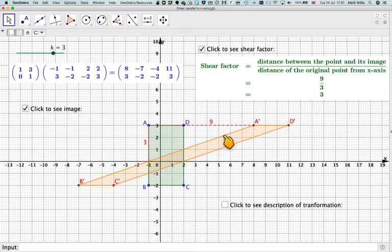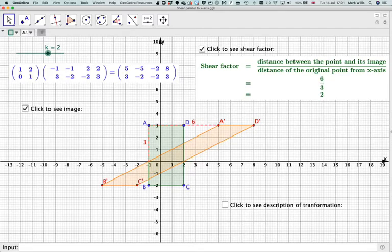Also notice that the gradient of this line here is 1 third. If you look closely you can get that by doing 1 over 3. If we move that back to being 2, for example, again you can see now the gradient is 1 half. That's 1 over 2, and the shear factor has now become 6 divided by 3, which is 2.